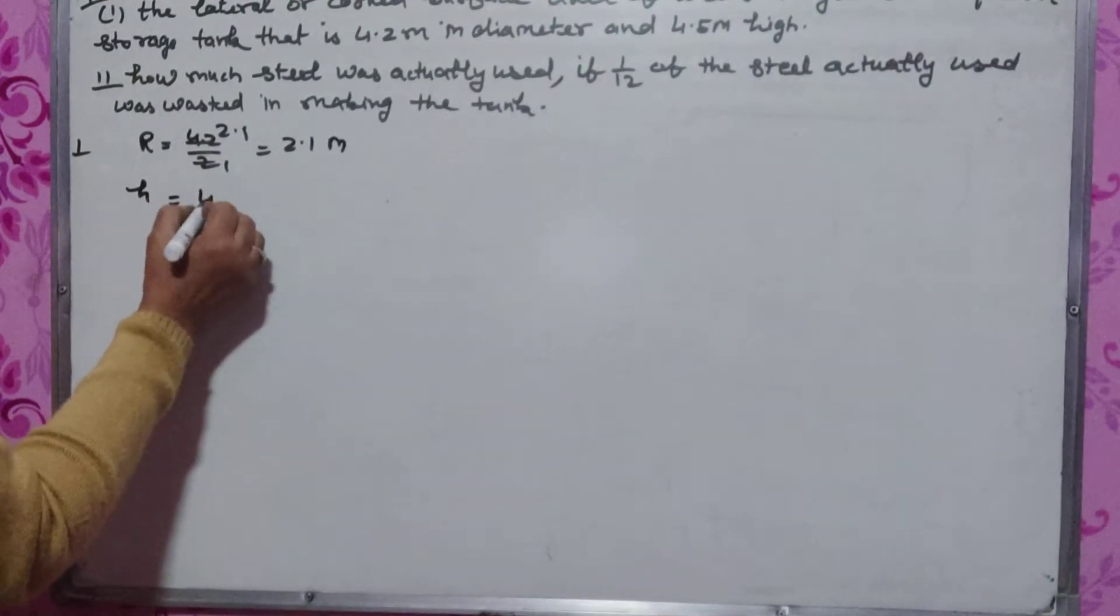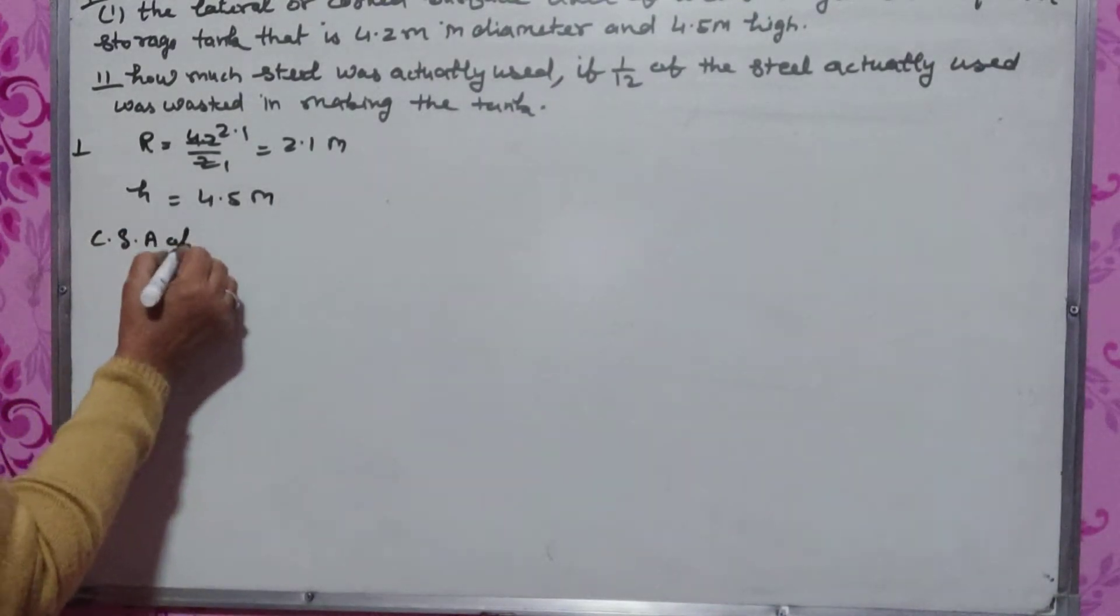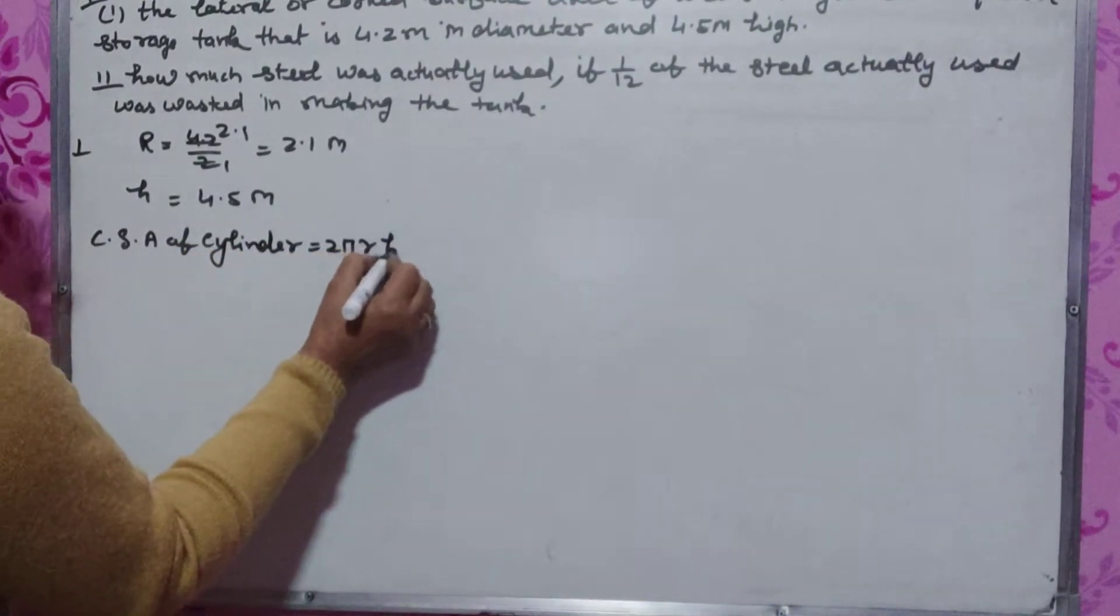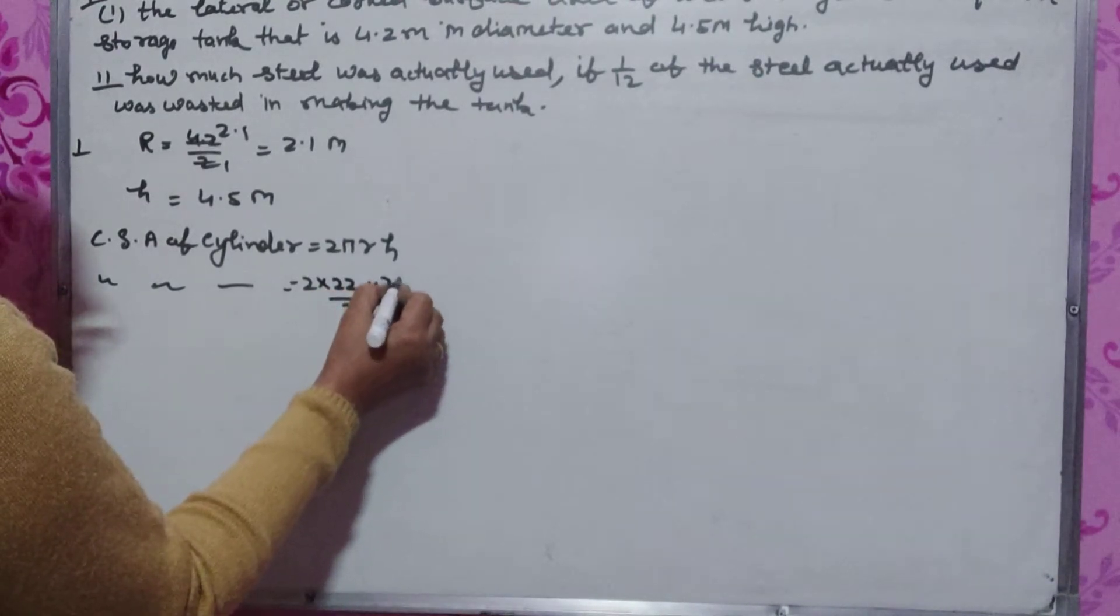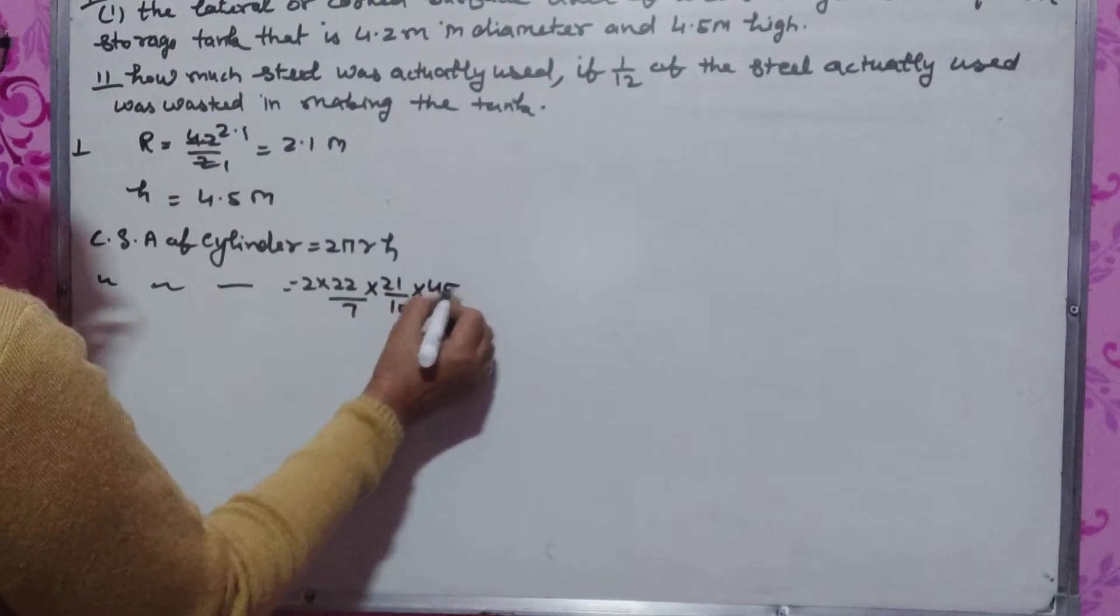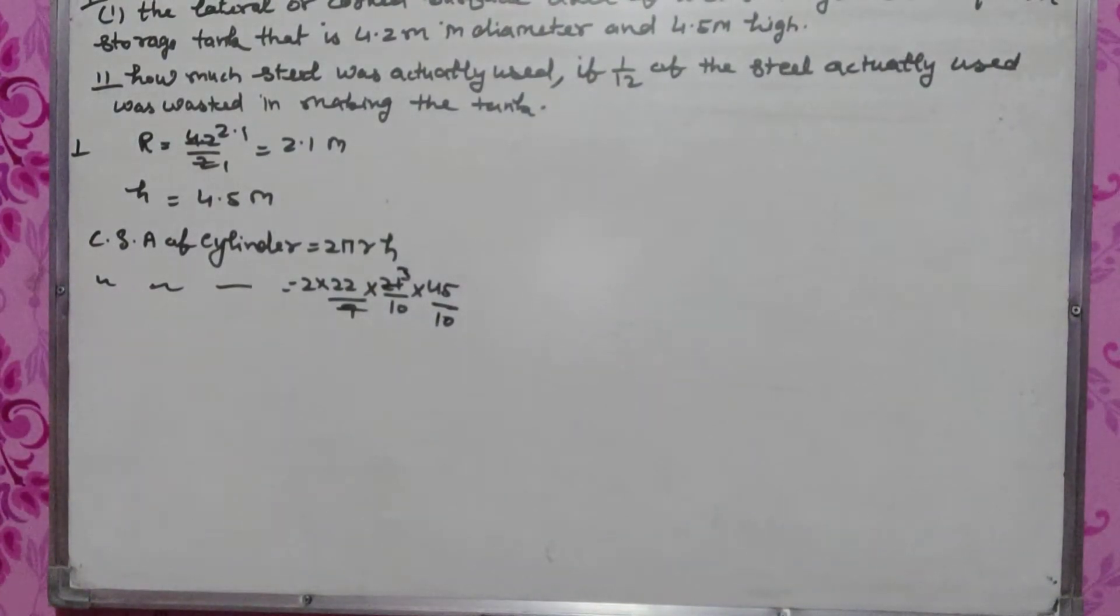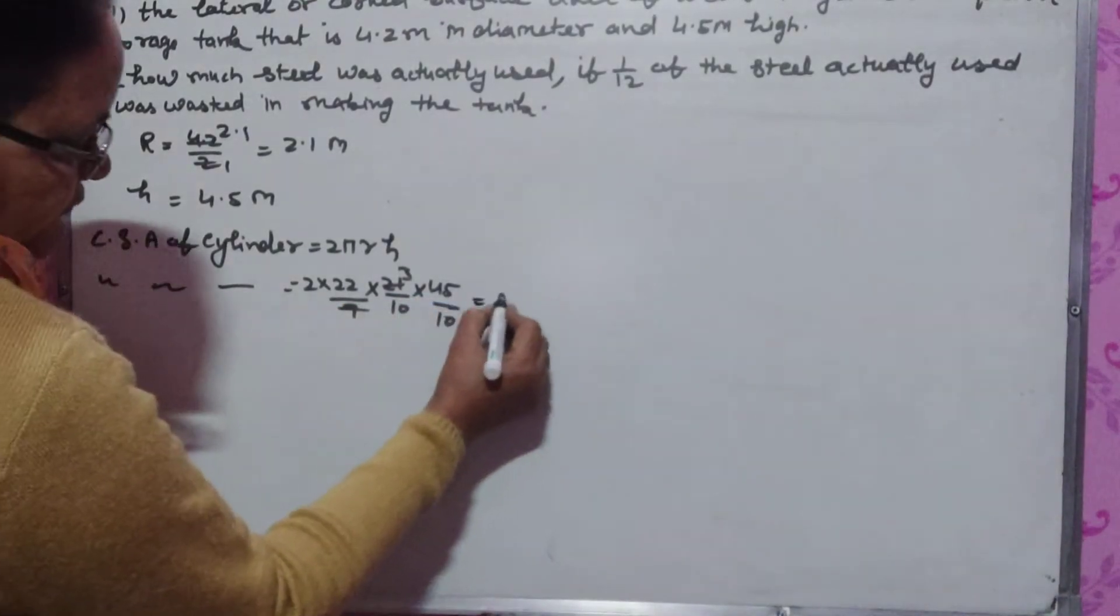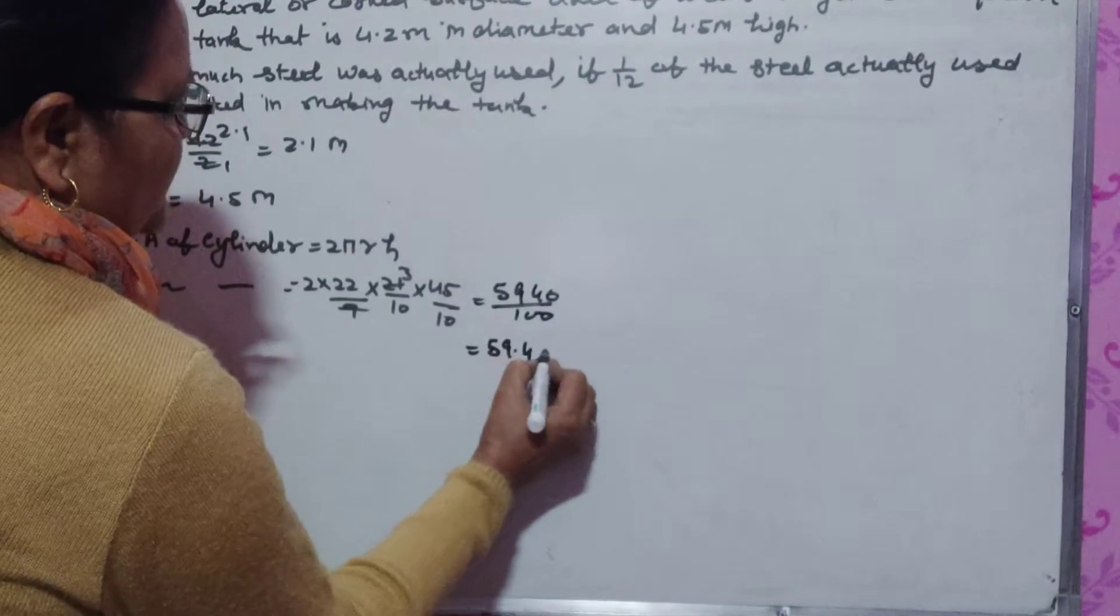Height is 4.5 m. Curved surface area of cylinder is 2 pi r h. Curved surface area of cylinder equals 2 times 22 by 7 times 21 by 10 times 45 by 10. Now we will multiply it. This equals 5940 by 100, which is 59.4 m squared.